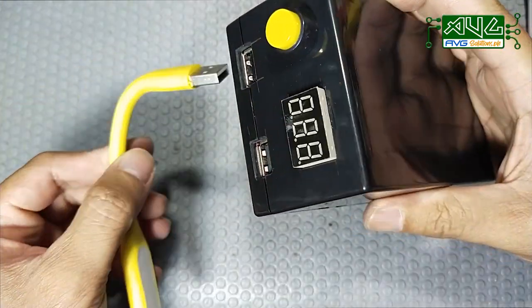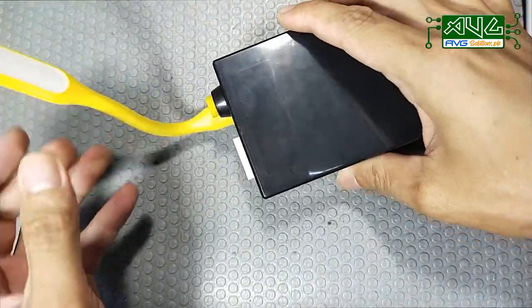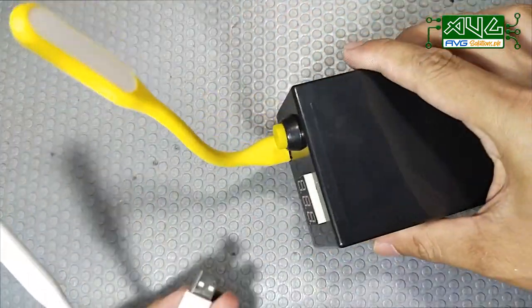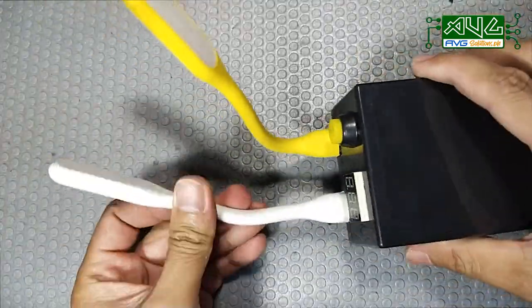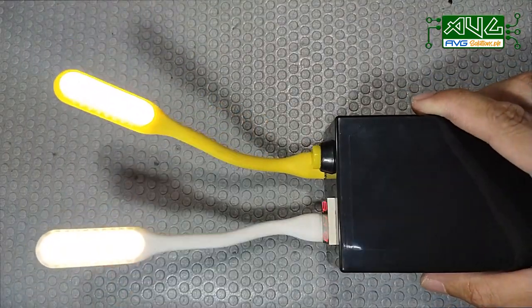Magtest tayo ng ibang output. Gamitin natin tong USB light na to. Gawin na natin dalawa. Then, power on. Ayun, no? Pwede na rin tong emergency light.